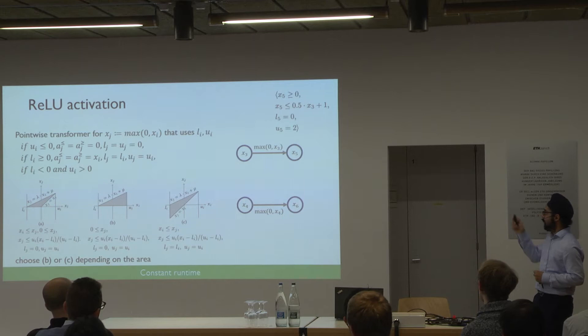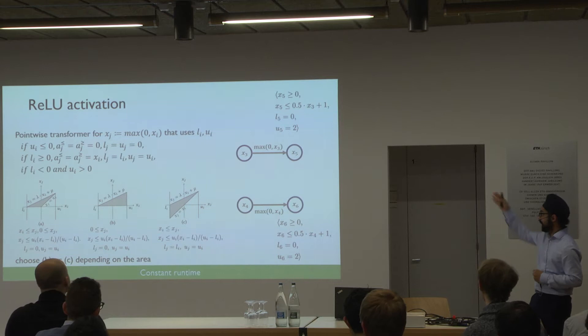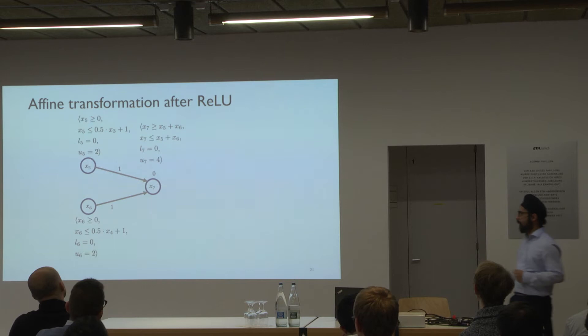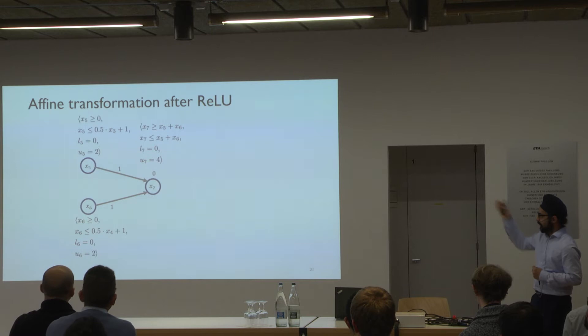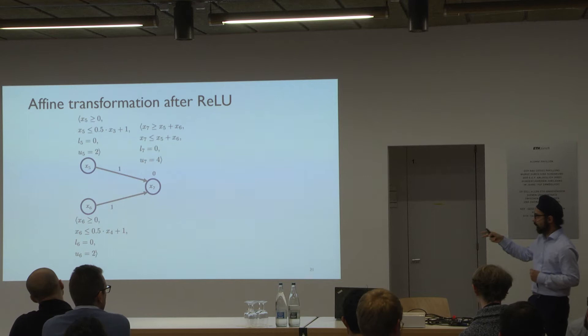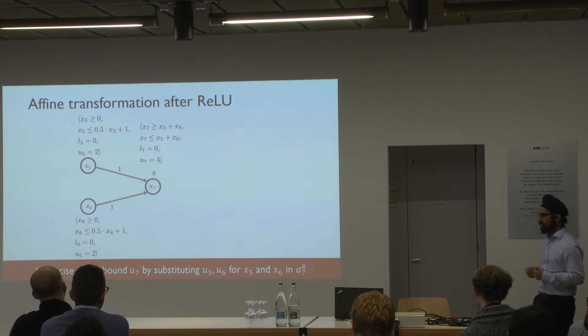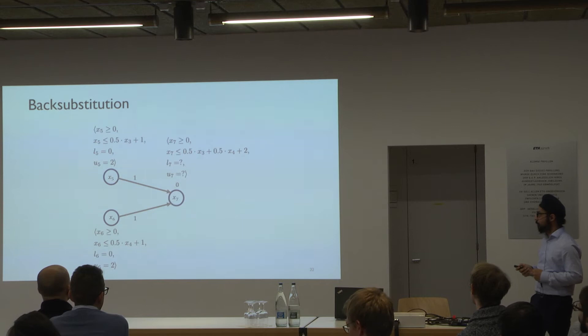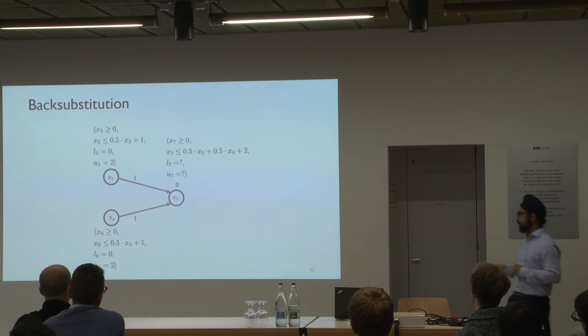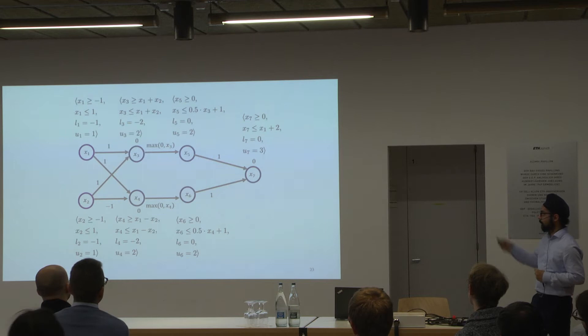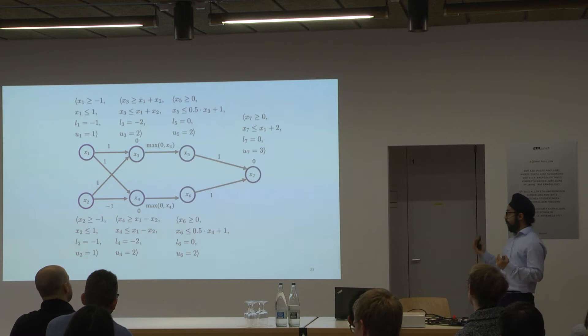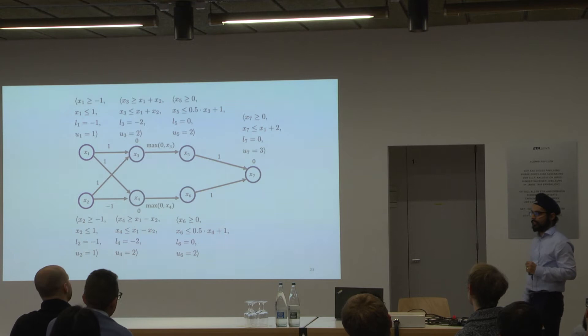First you add constraints for input neurons X1 and X2. The affine transformation adds upper and lower constraints for X3 and X4 — for example, X3 = X1 + X2 and X4 = X1 − X2, both with bounds in [−2, 2]. After the ReLU transformer, you add bounds for X5 and X6 between 0 and 2. For the next affine transformation, naively adding bounds for X5 and X6 gives X7 in [0, 4], which is imprecise. Using back-substitution — substituting expressions for X5 and X6 back through the network to the first layer — gives the tighter bound [0, 3]. The complexity of back-substitution is quadratic in the maximum number of neurons per layer, multiplied by the number of layers, and can be implemented efficiently on a GPU.